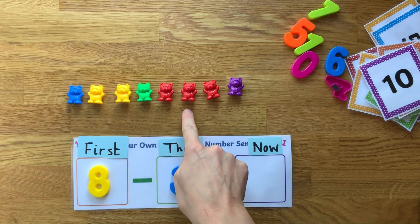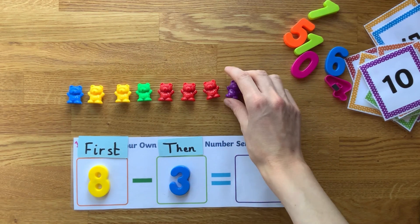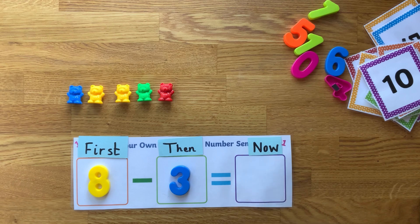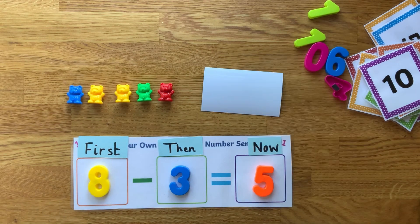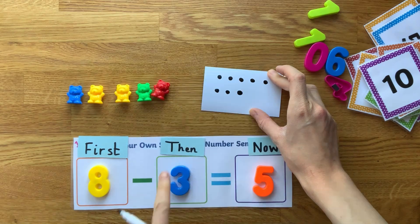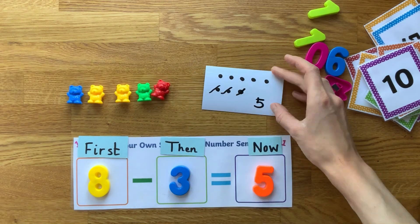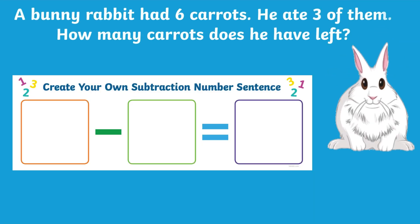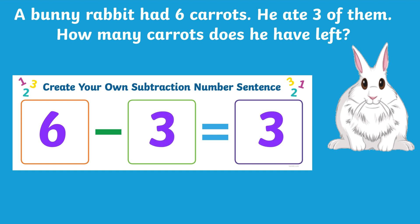You could present children with a subtraction number sentence and then children can use objects to work it out. Perhaps they could check their answer using a different strategy. You could also explore subtraction number stories with this resource — can children create number sentences to match the subtraction number stories?